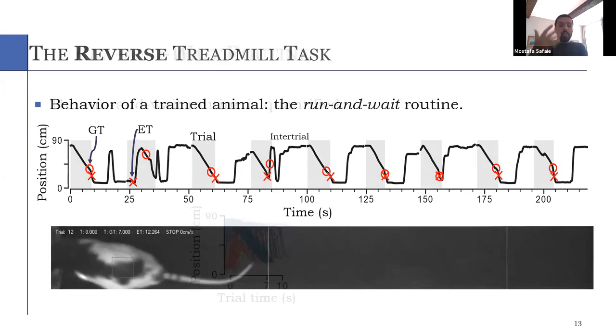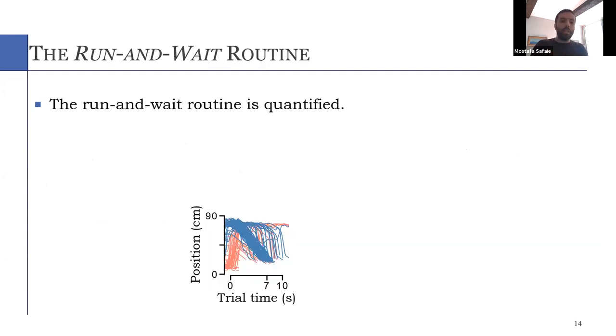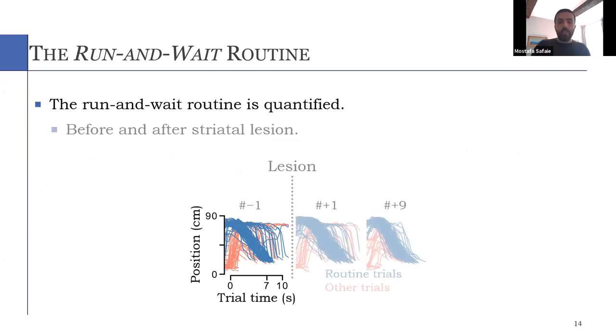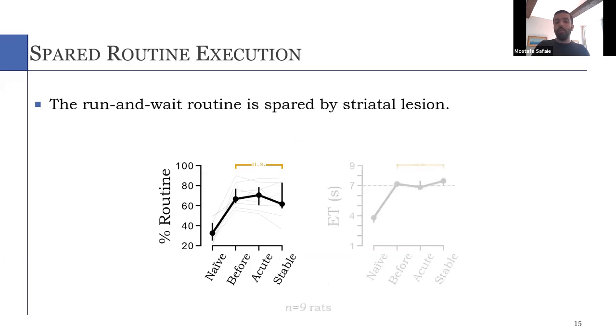So again, this new routine, which is very similar to the original routine, is a run and wait. And here indicated in blue before the lesion, most of the trials the animal is using this routine. And interestingly, even after the striatal lesion, the animal is still capable of performing this routine, even in the very first session. And at the group level in nine animals, they still perform the same routine after striatal lesion.